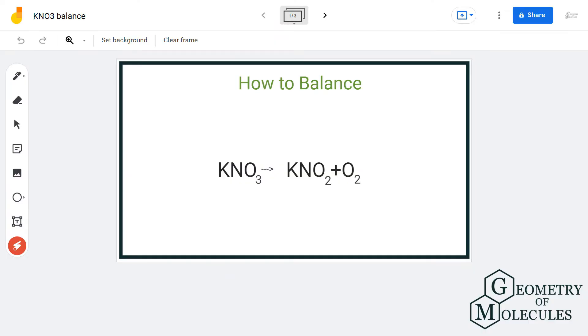Hello guys, welcome back to our channel. In this video we will balance the following equation in which potassium nitrate decomposes into potassium nitrite and oxygen. This is an example of a decomposition reaction where a single type of chemical compound breaks down into two or more new compounds or elements.